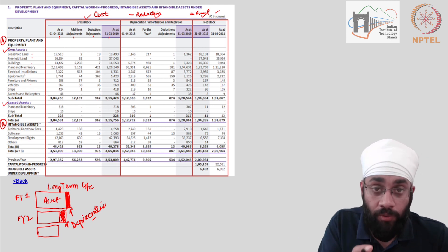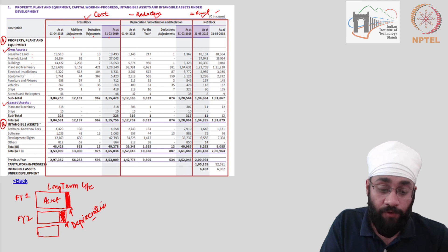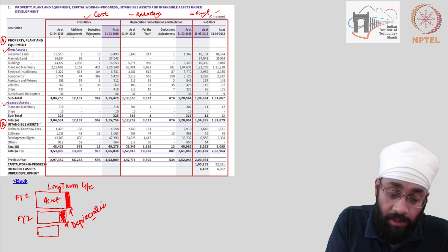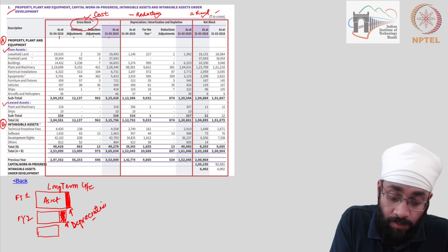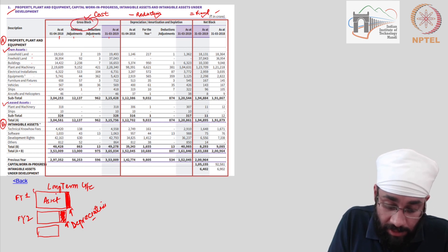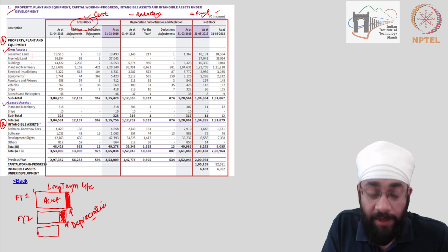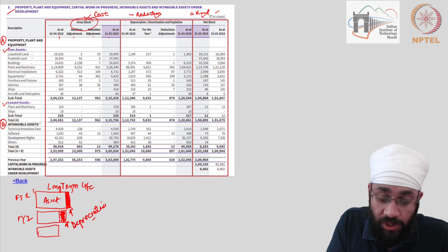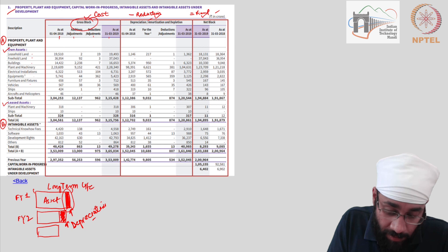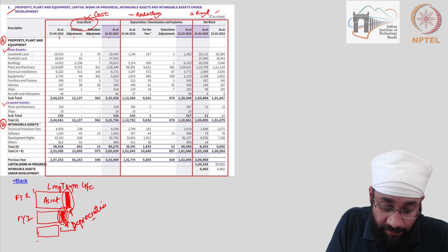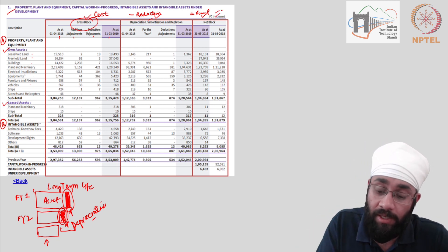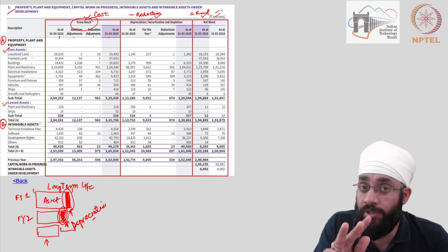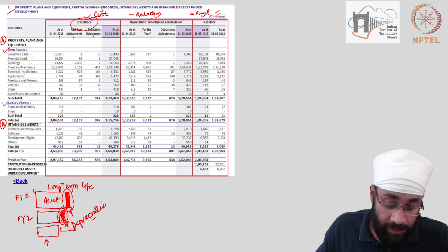All we want to understand from note one in the annual report of Reliance Industries Limited is that there is a gross block, which means in the beginning you had this much. Then depreciation is given in the second block — this amount plus that amount, total depreciation. Finally, the net amount is shown in the last column and hence in the balance sheet. Let's go back to the balance sheet.